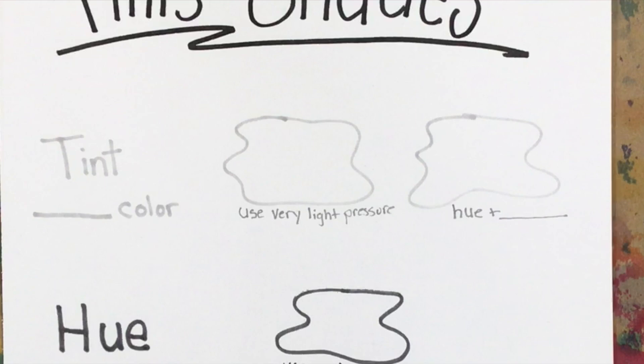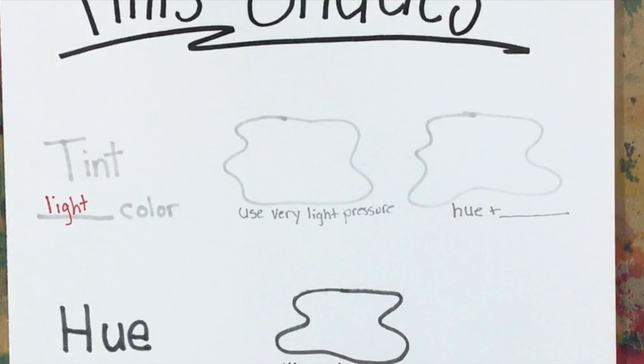Is a tint a light or a dark color? Tint is a light color. Make a tint in two ways. One is by using very light pressure to draw. The other is by taking our hue and adding white.